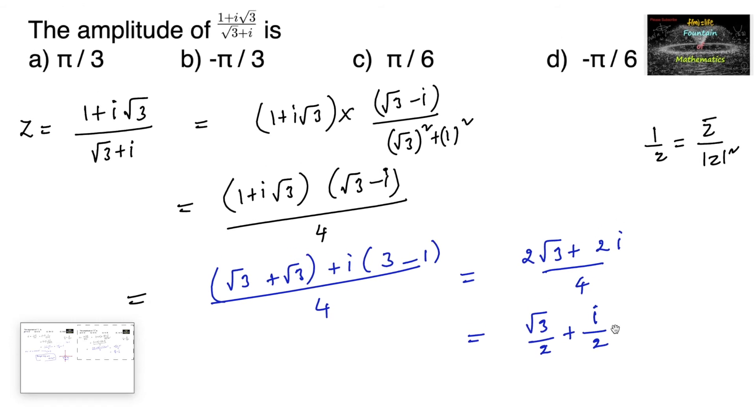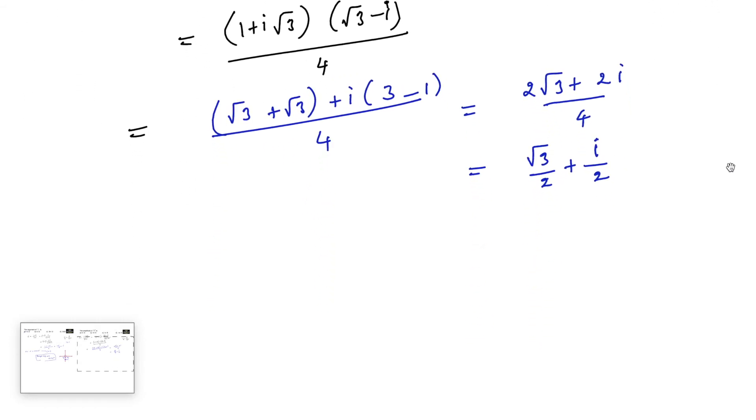Now, for a complex number z equal to a plus ib, the amplitude of z is equal to tan inverse of b upon a.